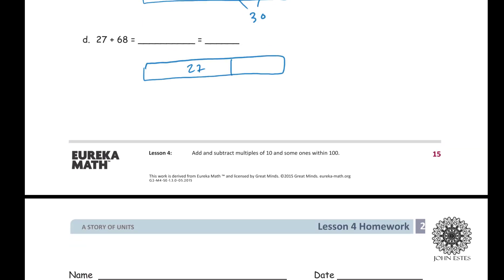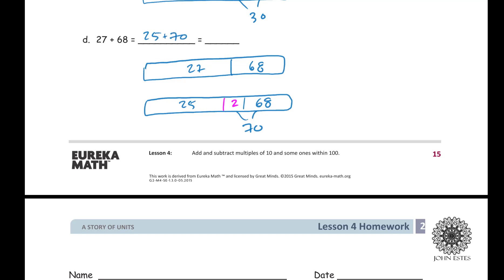Part D: 27 plus 68. I put my divider with 27 and 68. The 68 is closest to a multiple of 10 in this case, so I ask two people to move from the room of 27 over to 68 — that group becomes 70, and 27 becomes 25. So I have 25 plus 70, which is easier to calculate mentally than 27 plus 68, and the answer is 95. What we're illustrating is that adding and subtracting multiples of 10 is easier, and these tape diagrams are a quick way to visualize how to balance the equation.